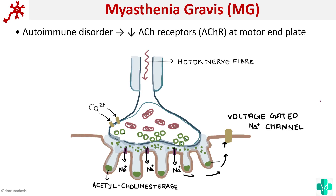What is myasthenia gravis? Myasthenia gravis is basically an autoimmune disorder which leads to decreased acetylcholine receptors at the motor end plate. To understand this first concept, you should first understand the normal neuromuscular transmission. Once the nerve impulse reaches the presynaptic neuron, the depolarization will cause opening up of calcium channels. These calcium channels will cause release of the neurotransmitter acetylcholine into the synaptic cleft, and this acetylcholine will bind onto acetylcholine receptors which are present on the motor end plate.